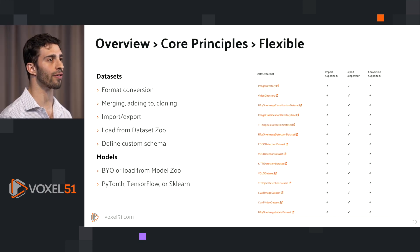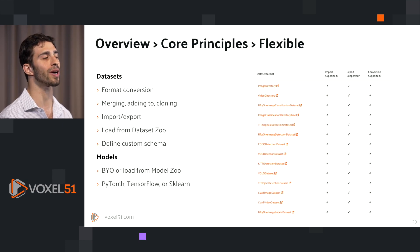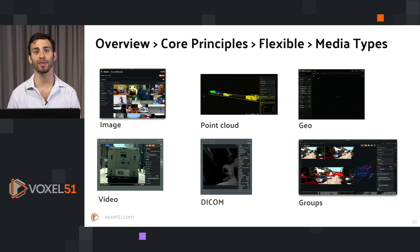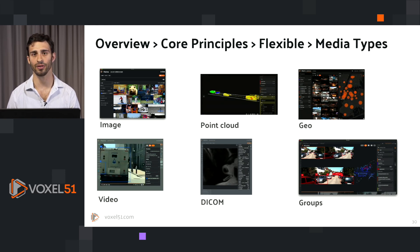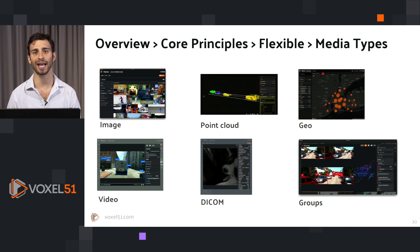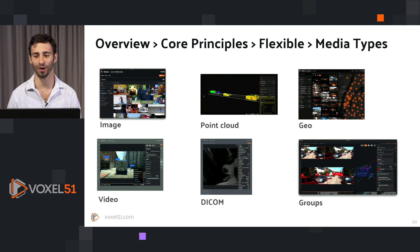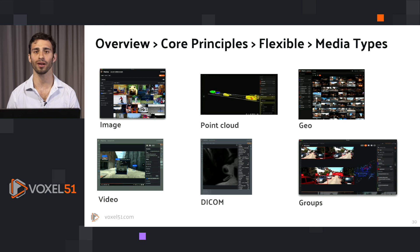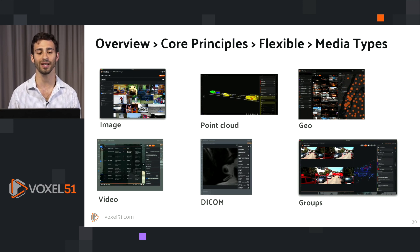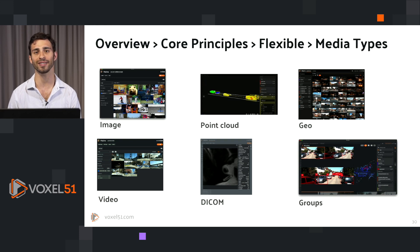The same flexibility extends to models. You can bring your own models, whether you're working in PyTorch, scikit-learn, TensorFlow, or some other ML framework, or you can use one of the models already built to integrate with FiftyOne in the FiftyOne Model Zoo. This flexibility also extends to media types: FiftyOne works with images, videos, geo data, point clouds, and even DICOM data. DICOM is useful in medical fields, geo data for location-based analysis, point clouds in autonomous vehicle applications, and you can also group data of different modalities together in grouped datasets.